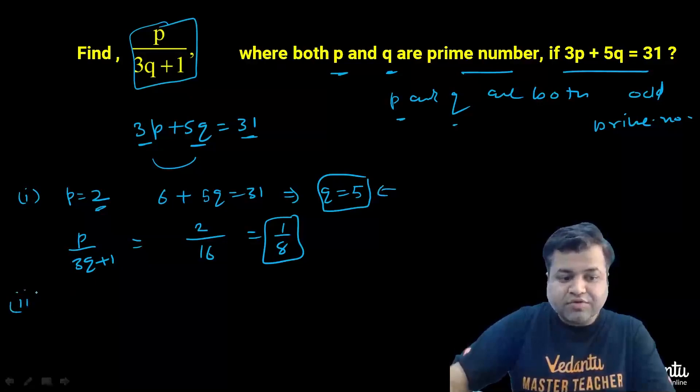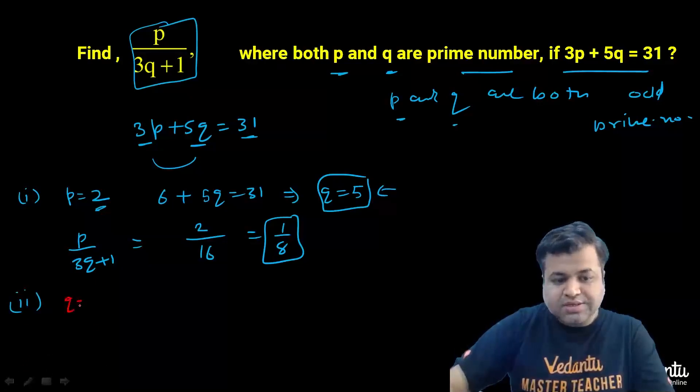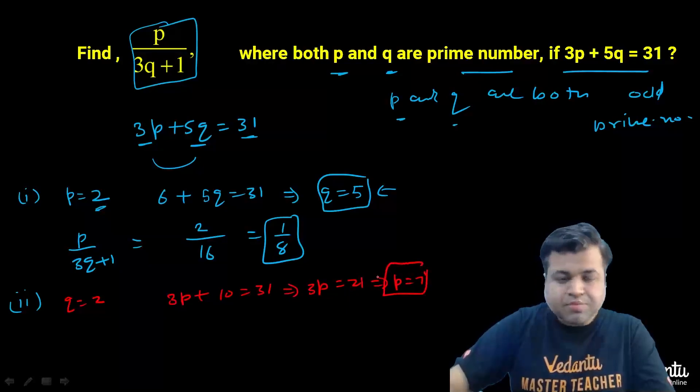Now let's consider case 2, when Q is 2. If Q is 2, the equation becomes 3P plus 10 equals 31, or 3P equals 21, so P is 7. Again, 7 is also a prime number.